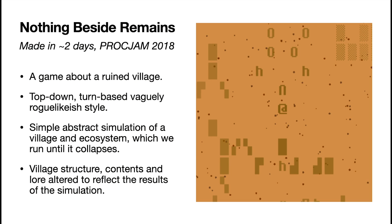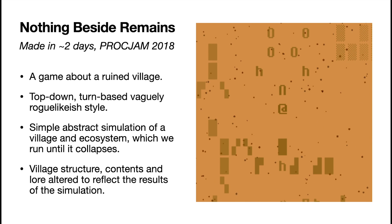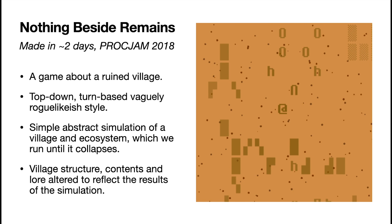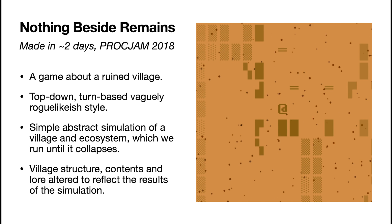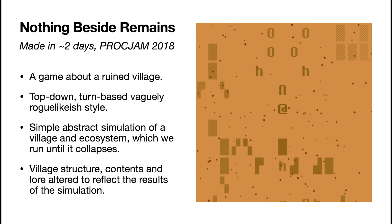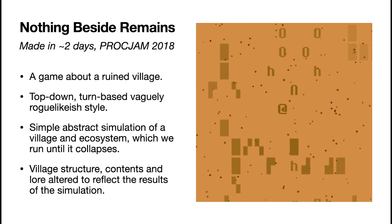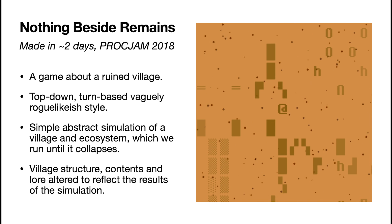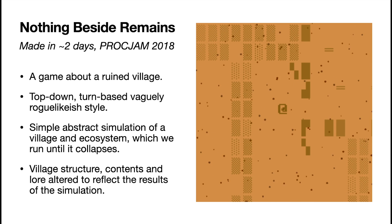The two prototypes I want to talk about today were made for the procedural generation jams in 2018 and 2019. The first was made in just 48 hours as a proof of concept. In it, you play an archaeologist or explorer who's come across a ruined village in the middle of a desert. Your objective is to move around and learn what happened to this village and what it was like when it was inhabited. To create the village, we run an abstract simulation in the background that models certain things about how the villagers lived and what happened to the environment around them.